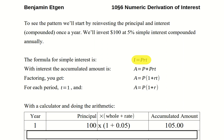To get the accumulated amount, we need to add what we invested to the amount of interest that we earn. We don't just get the interest back — we get the principle and the interest back. That's called the accumulated amount. Notice that the P's on the right side factor out, leaving 1 plus RT.